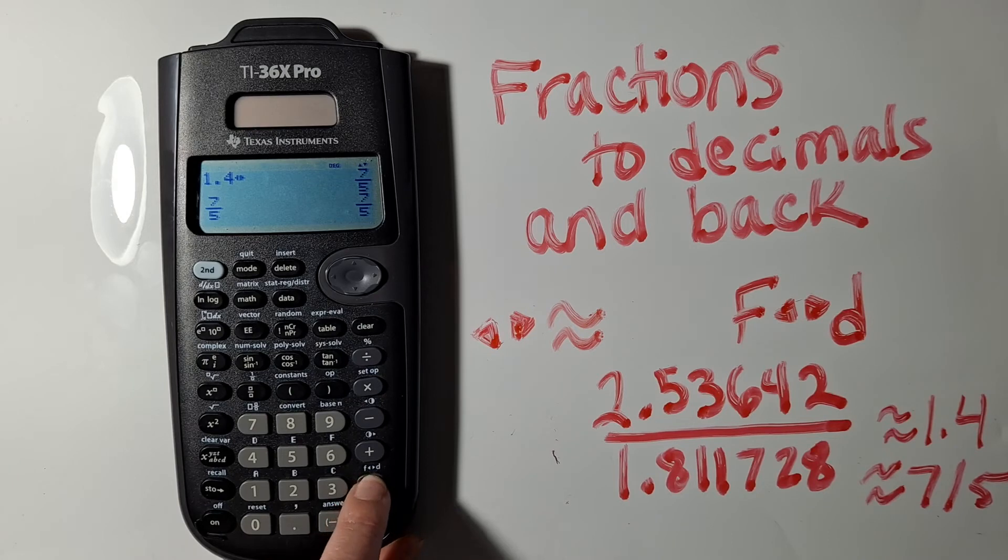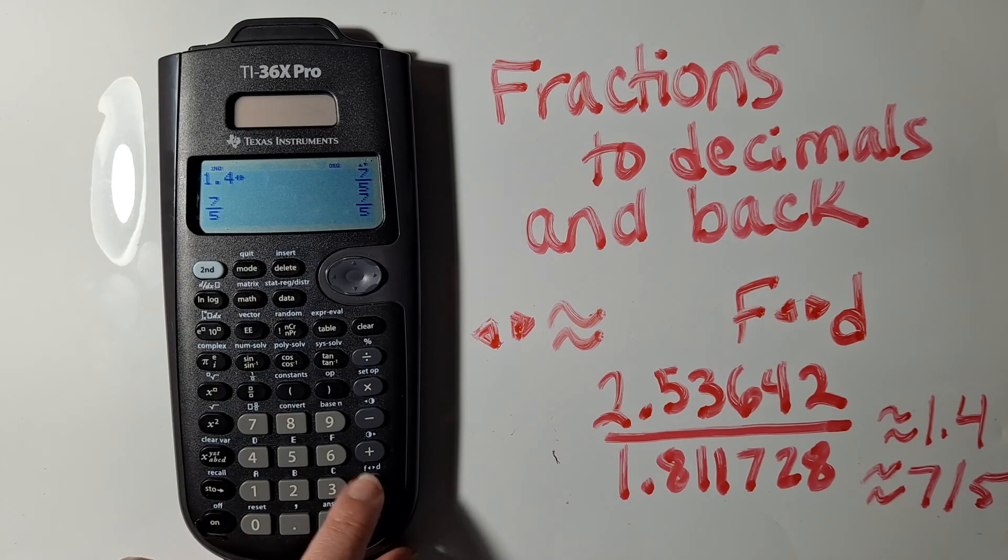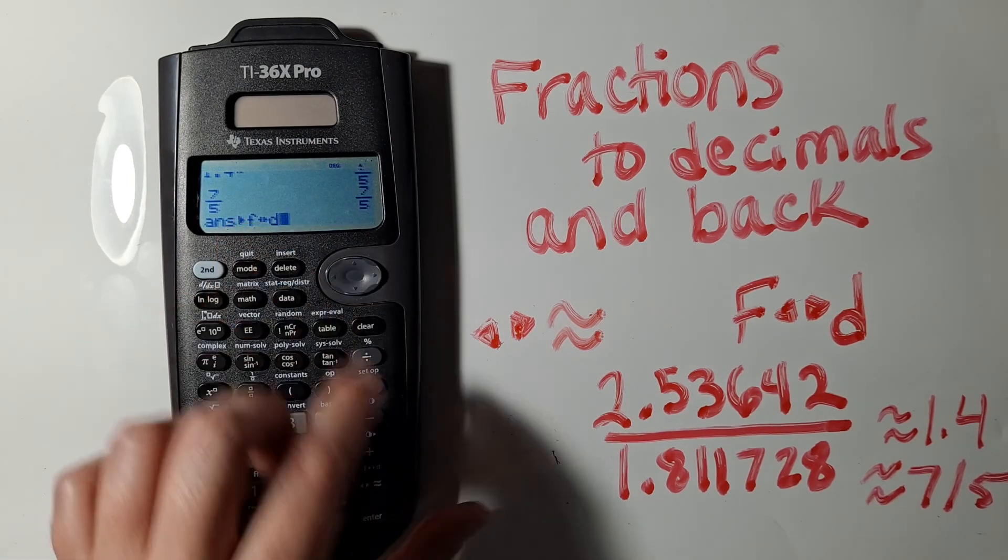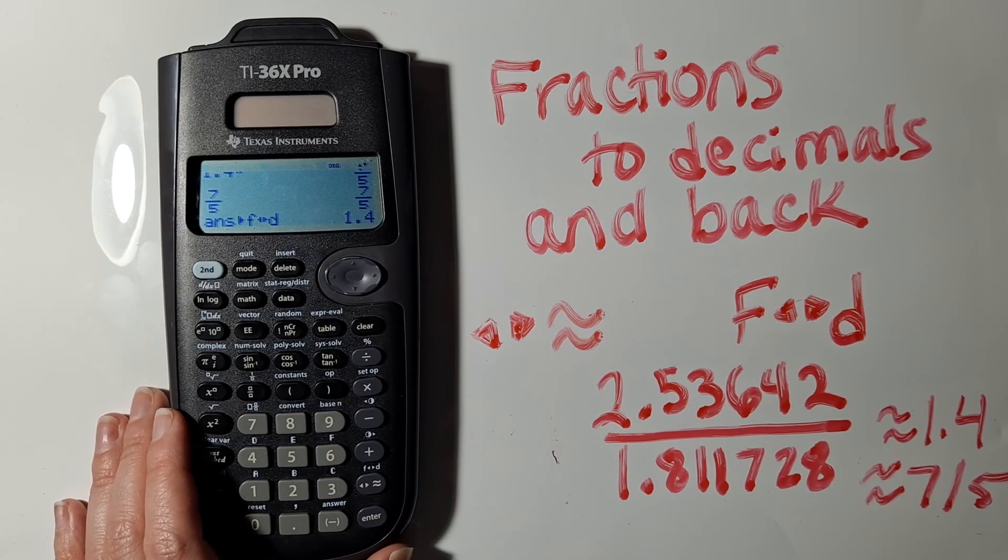F to D stands for fraction to decimal. You can see that above here. So I'm going to go to second and then F to D and hit enter and now it displays as 1.4. Hope that helps.